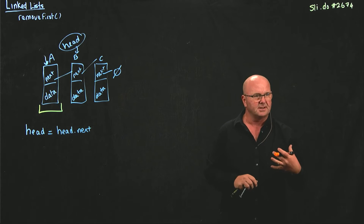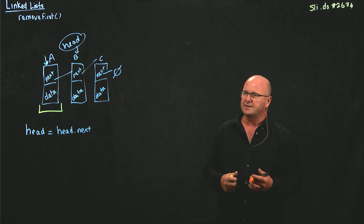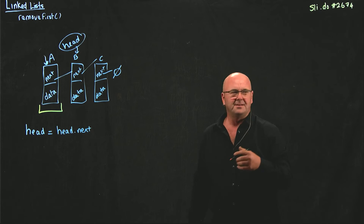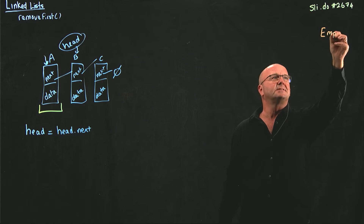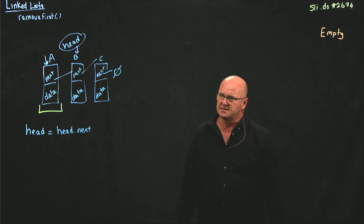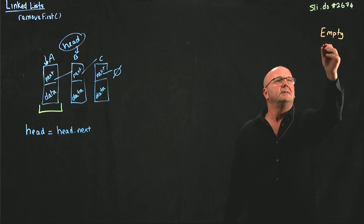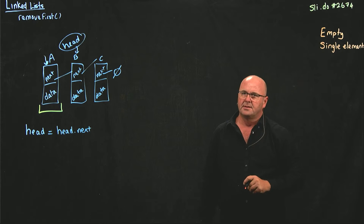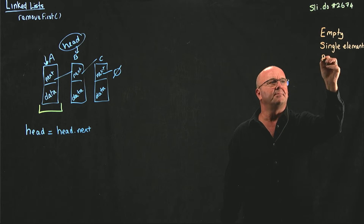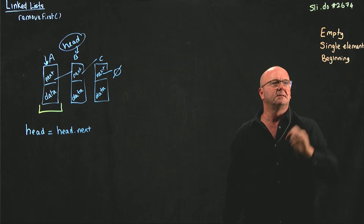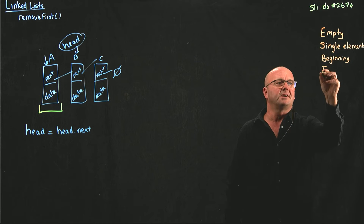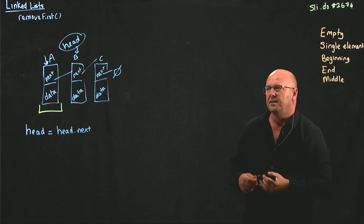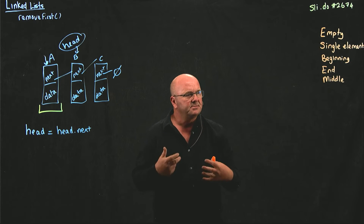Last time we also talked about some boundary conditions that we have to worry about when we're operating on data structures. We had five conditions. The first one is if we have an empty list. The second one is if we have a single element. The third is when we're working at the beginning of a list. The fourth is when we're working at the end of a list. And the last one is when we're working in the middle. We have to think about each of those conditions when working on our remove methods.